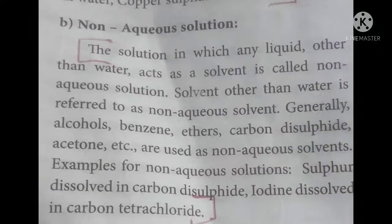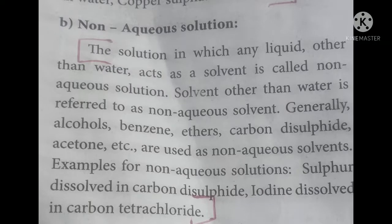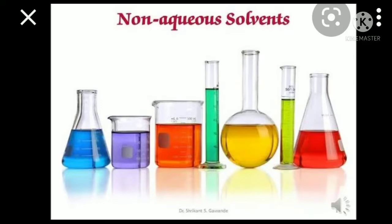Other than water, any liquid — that may be benzene, ether, alcohol, or anything — if you are using it for dissolving substances, then we call it a non-aqueous solution. For example, sulfur is a non-polar compound, hence it does not dissolve in water. So we choose carbon disulfide, which makes sulfur dissolve. Similarly, iodine is a non-polar compound that does not dissolve in water, so we choose carbon tetrachloride. These organic solvents form non-aqueous solutions. Based on the type of solvent, there are two types: aqueous and non-aqueous.